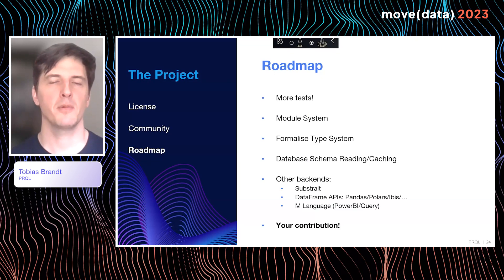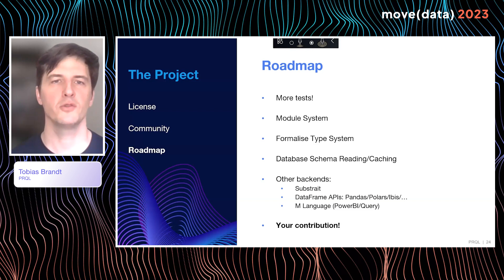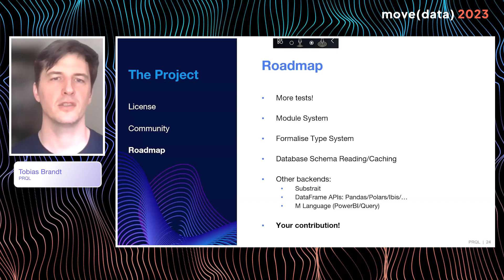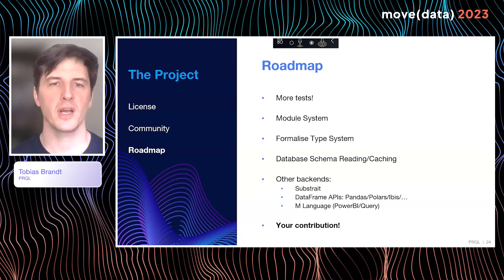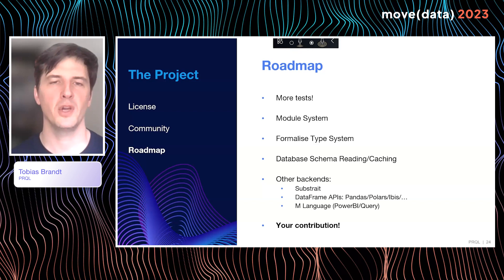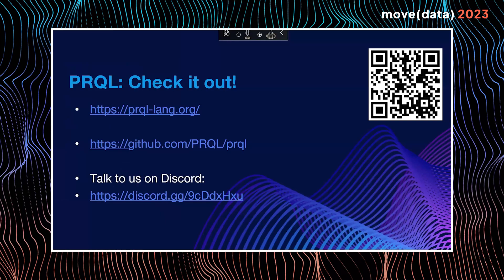Finally, our roadmap. There are a couple of things we're excited about introducing soon: our module system and formalizing the type system, and also doing more with databases — reading schemas and supporting other backends such as Substrait or some of the data frame APIs. Of course, if there's anything missing that you'd like to see, please come and contribute — open that PR. We do our best to merge and review PRs as soon as we can, and we're a very friendly community. Please check out our website, GitHub repo, or come talk to us on our Discord. Thank you.